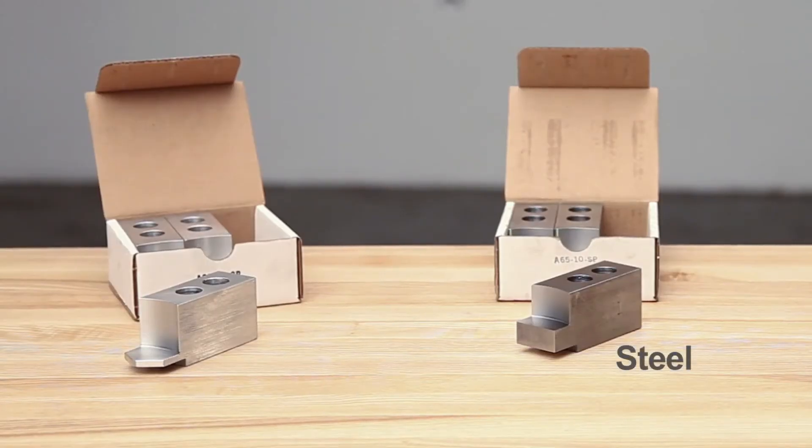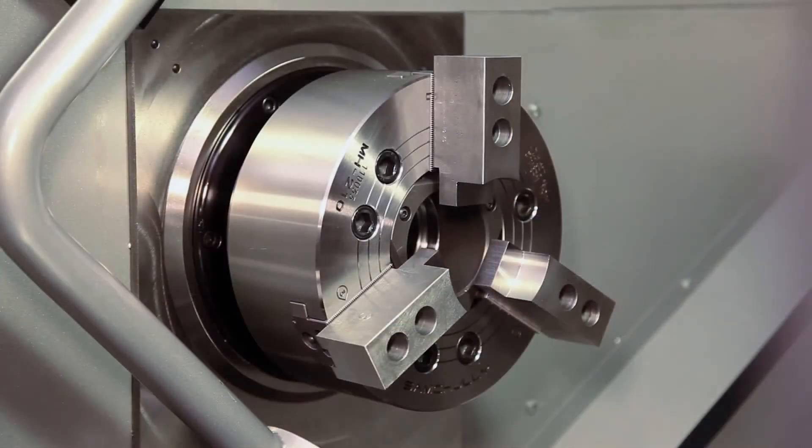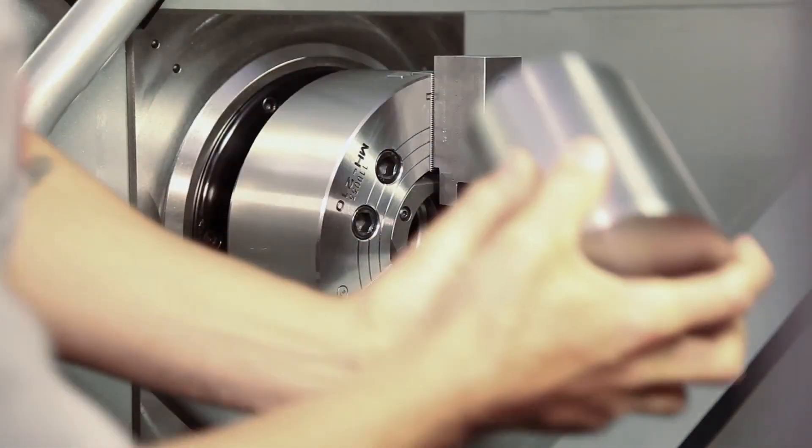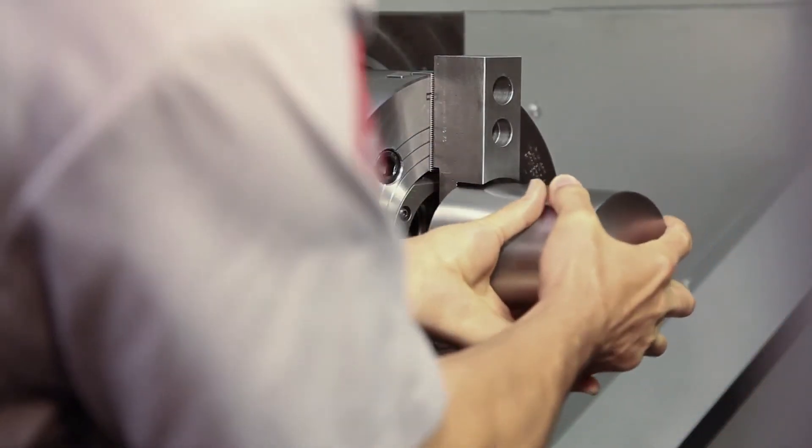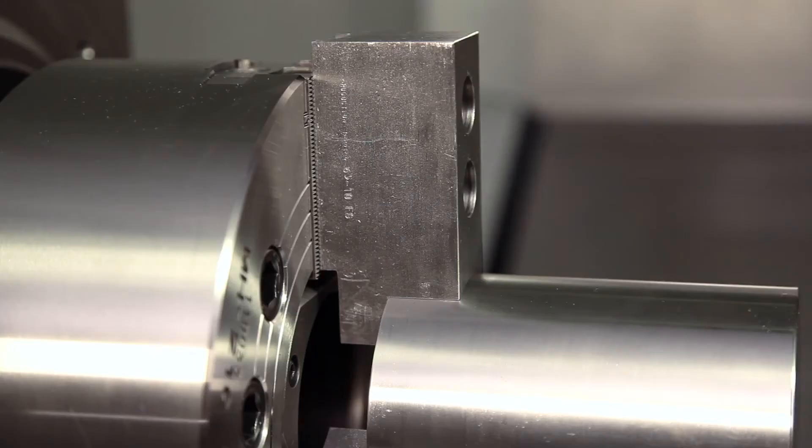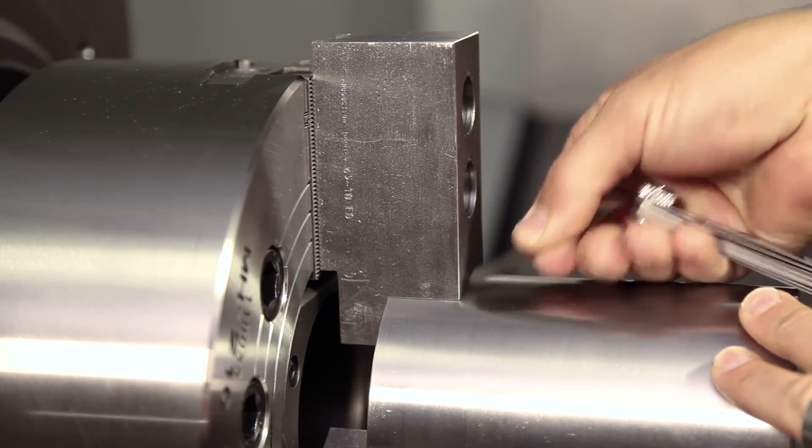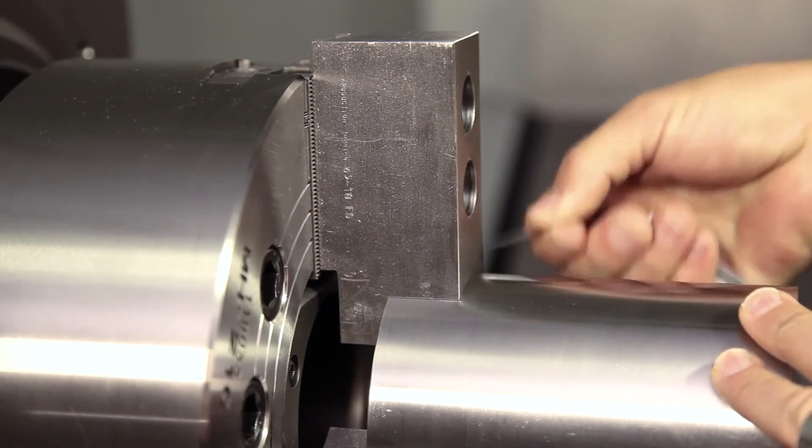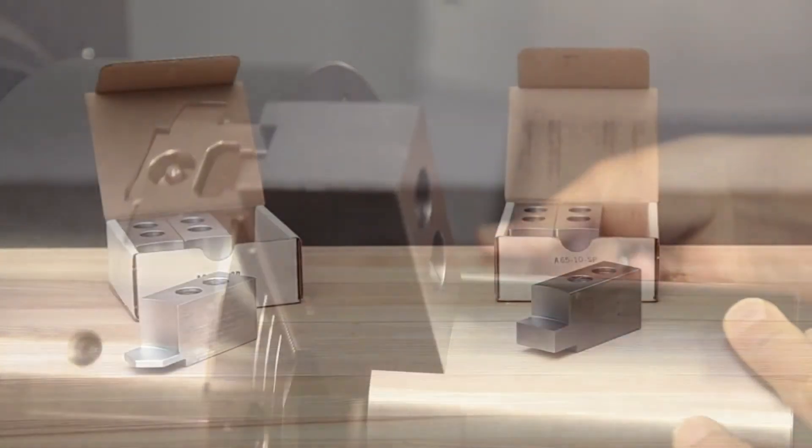This set of short steel jaws was bored to 1 inch deep while being held at 100 psi. When we clamp this accurately machined slug at 300 psi and check for deflection, we find that we can't insert even a 1,000th of an inch feeler gauge at the jaw tips.